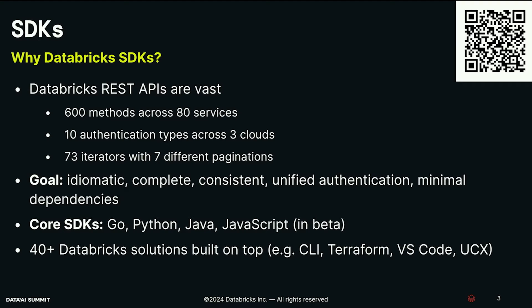On the bottom of this layer cake, we have the Databricks SDKs. But why do we need the Databricks SDKs? If you've used the Databricks REST APIs before, you know there's a lot to it. There are 600 methods across 80 services, and that can make it very challenging for developers to navigate this, to build code consistently, and to scale that.